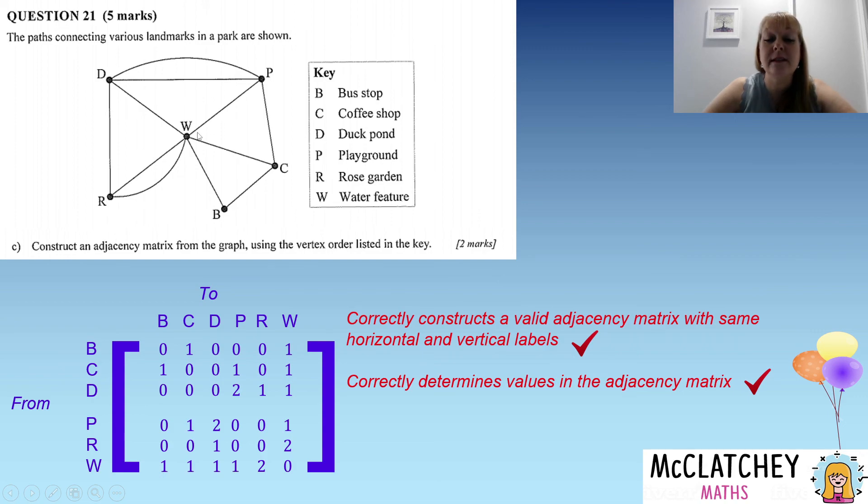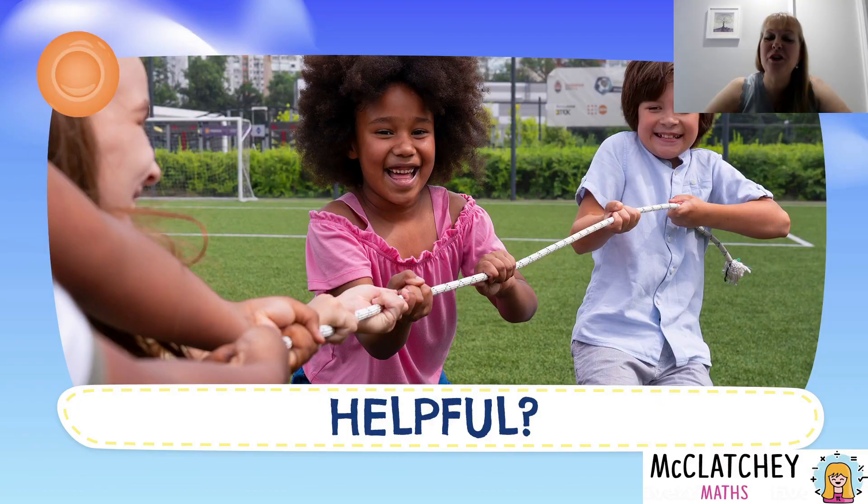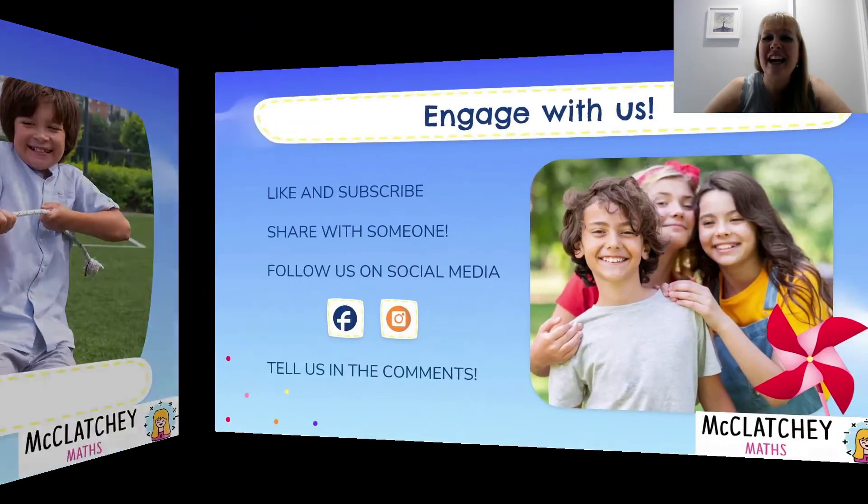A good way to check your work: if you look here, for example, because this is not a directed graph, and what I mean by that, there's no arrows. So a good thing to do for checking is, for example, from B to W there's one pathway from B to W. Now if I go backwards, that means from W to B there should also be a one there as well. So that match should be the same in reverse. It's a good way of checking your work.